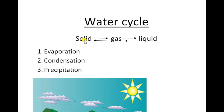We have three important components in the water cycle. First is evaporation, second is condensation, and third is precipitation. And we want to look at the image of the diagram.